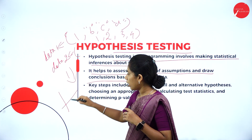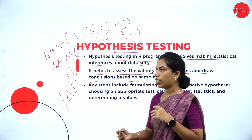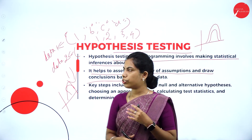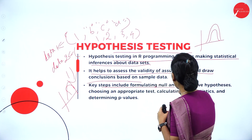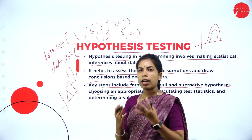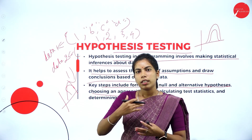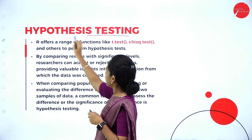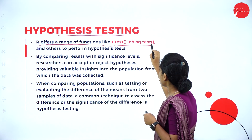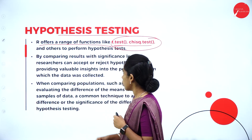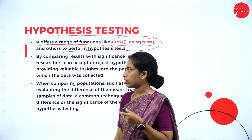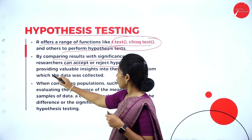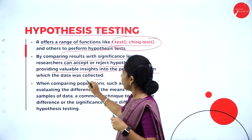When we draw these two datasets into hypothesis testing, it handles two samples and generates a graph. Key steps include formulating null and alternative hypotheses. After conducting the test, we conclude which belongs to the null or alternative hypothesis. R offers functions like the chi-square test and T-test. By comparing results with the significance level, researchers can accept or reject the null hypothesis, providing insights into the population from which data was collected.